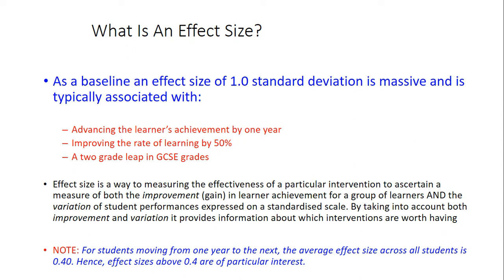Effect size — there is a statistical definition you can look at, and you can even go to Visible Learning, John's big book on this, and look at all the technicalities of the methodology. But the bottom line is this: an effect size of 1.0 standard deviation is massive — it advances the learner's achievement by one year and improves the rate of learning by 50%. What's really interesting is that students will typically, from one year to the next, average an effect size of 0.40 — so any effect size above that is of real interest because it's going to have a significant impact.